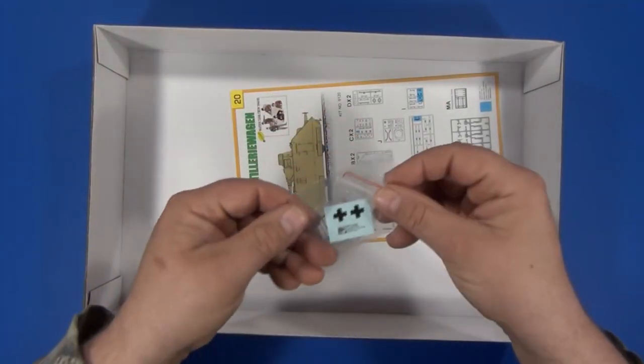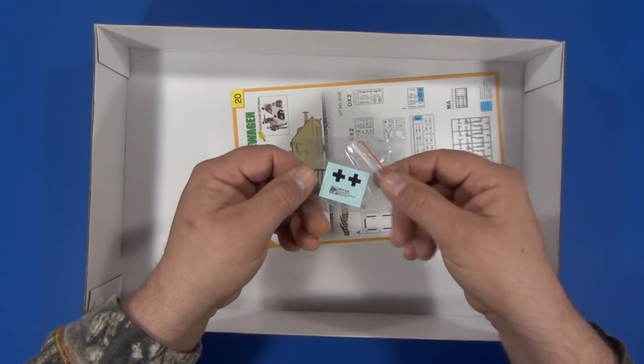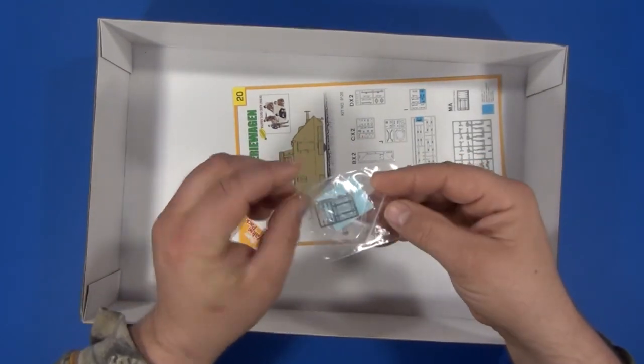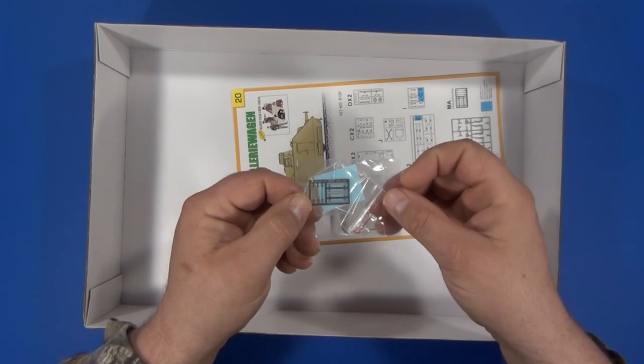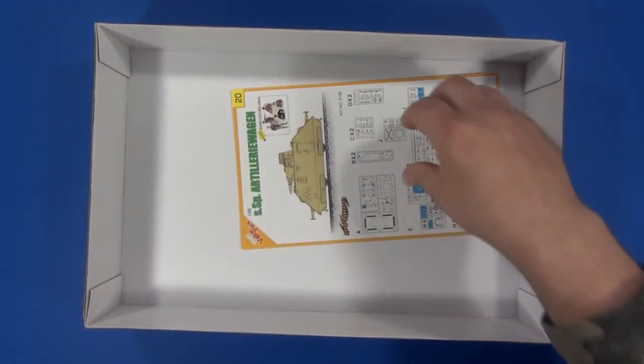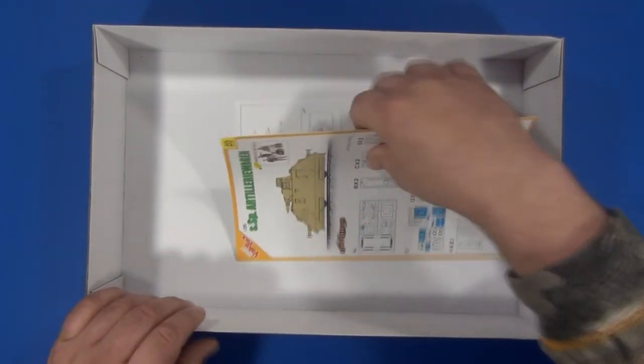We have a small bag containing the decal sheet and a small photo etch fret, and lastly we have the instruction sheet.